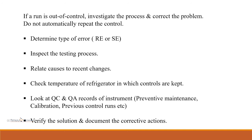If a run is out of control: investigate the process and correct the problem. Do not automatically repeat the control. Determine the type of error — random or systematic. Inspect the testing process and relate causes to recent changes. Check the temperature of the refrigerator in which controls are kept, as every control is temperature sensitive, with specific storage instructions on the control batch. Look at QC and QA records of the instrument — preventive maintenance, calibration, previous control runs, etc. Verify the solution and document the corrective actions.